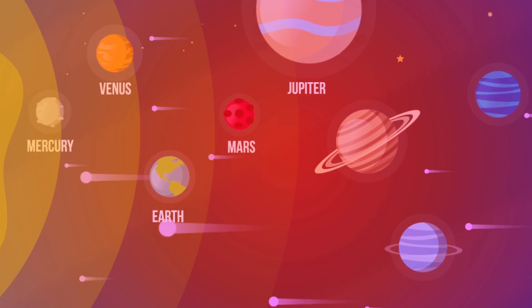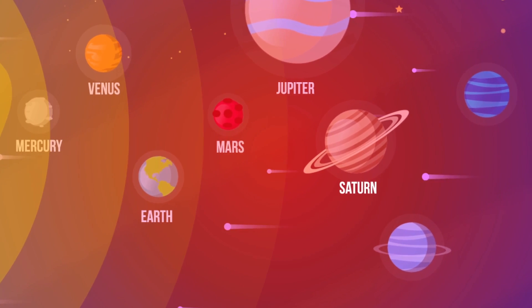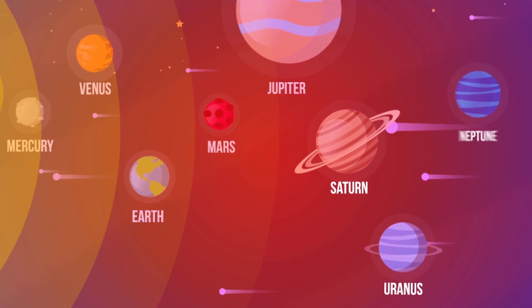Following Jupiter, of course, comes Saturn, another gas planet, and then two smaller, colder gas planets, Uranus and Neptune.